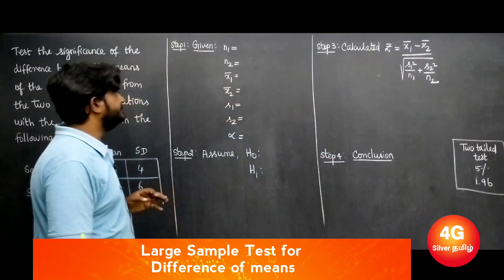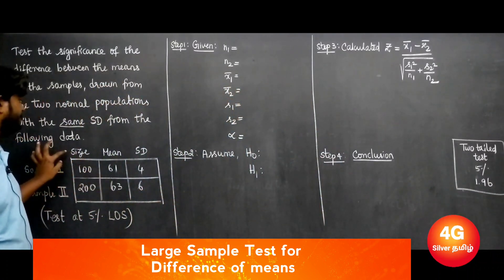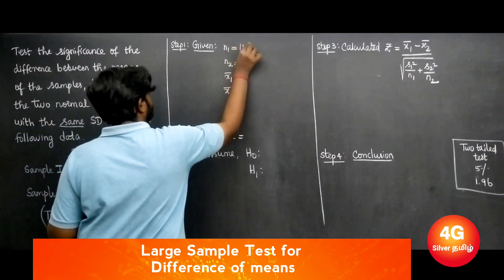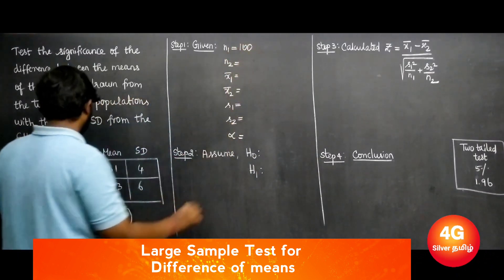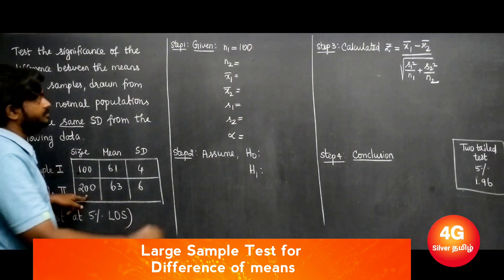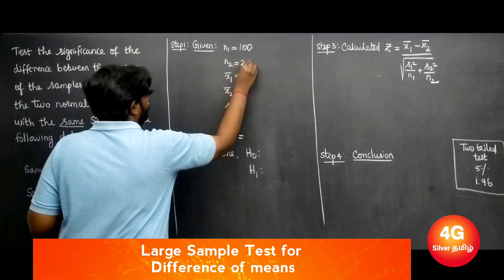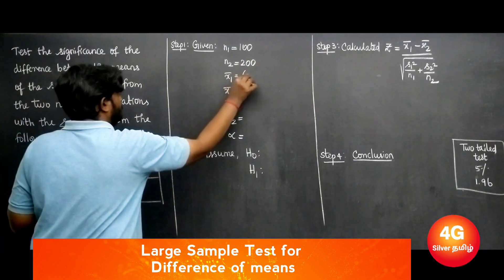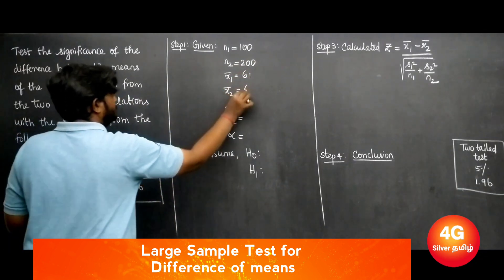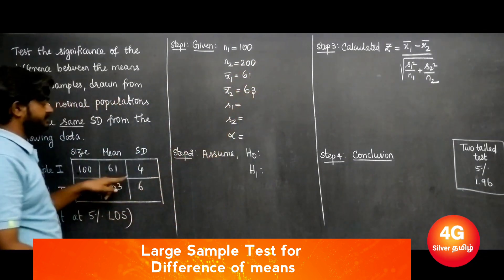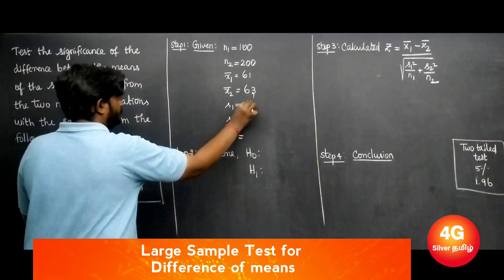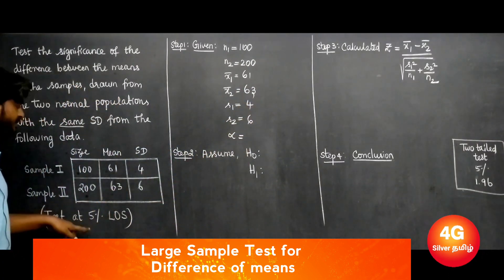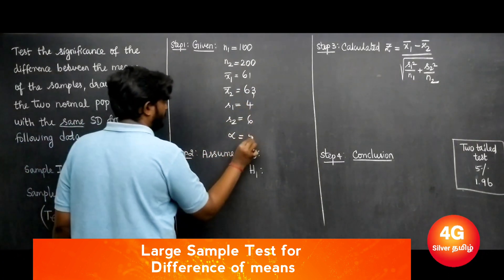The given data: n1 = 100, n2 = 200. Next, x̄1 (first mean) = 61, x̄2 (second mean) = 63. Standard deviation s1 = 4, s2 = 6. Test at 5% level of significance.